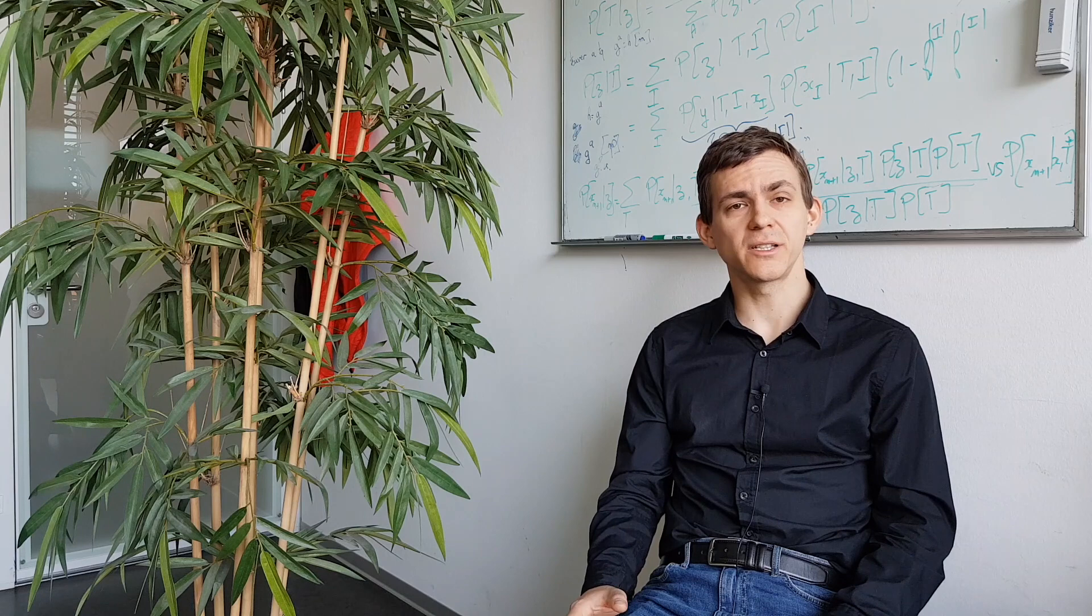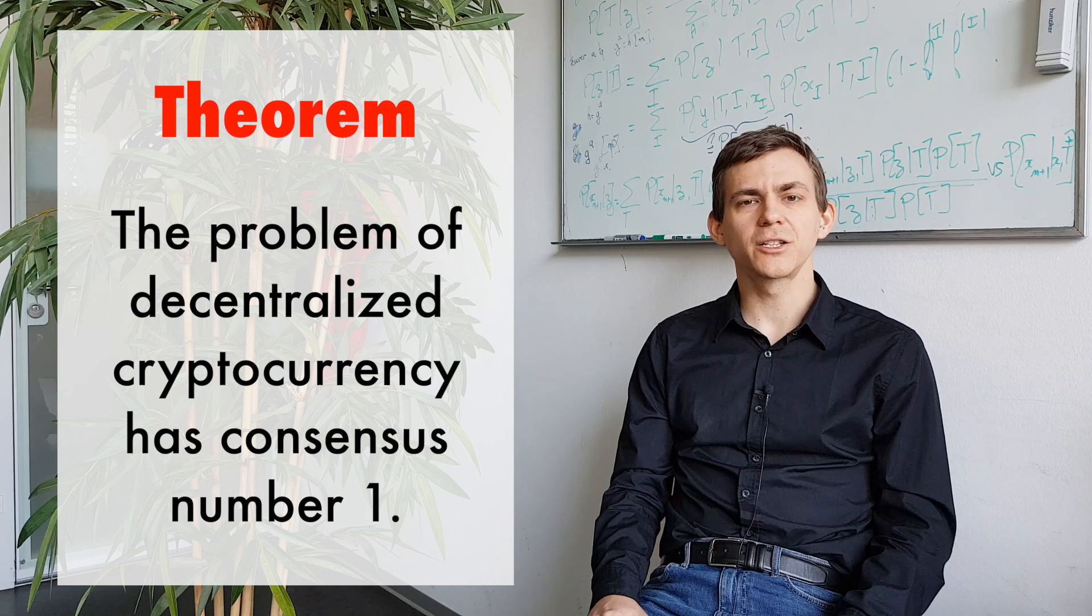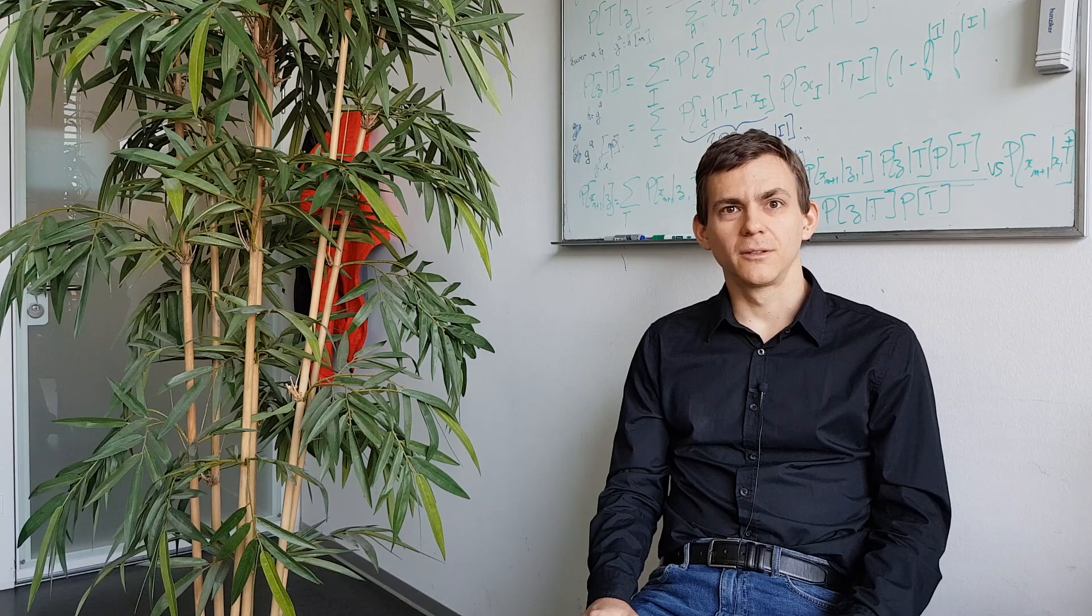Now the blockchain protocol solves the consensus problem. So it addresses problems of consensus number infinity. And thus it can be used to solve the distributed cryptocurrency design problem. But this is actually an overkill. Indeed, the interesting result that we have with Professor Kuznetsov from Paris is that the money transfer problem, which boils down to avoiding double spending, actually has consensus number one. That means that agreement is not necessary at all. This is a very spectacular and exciting result.